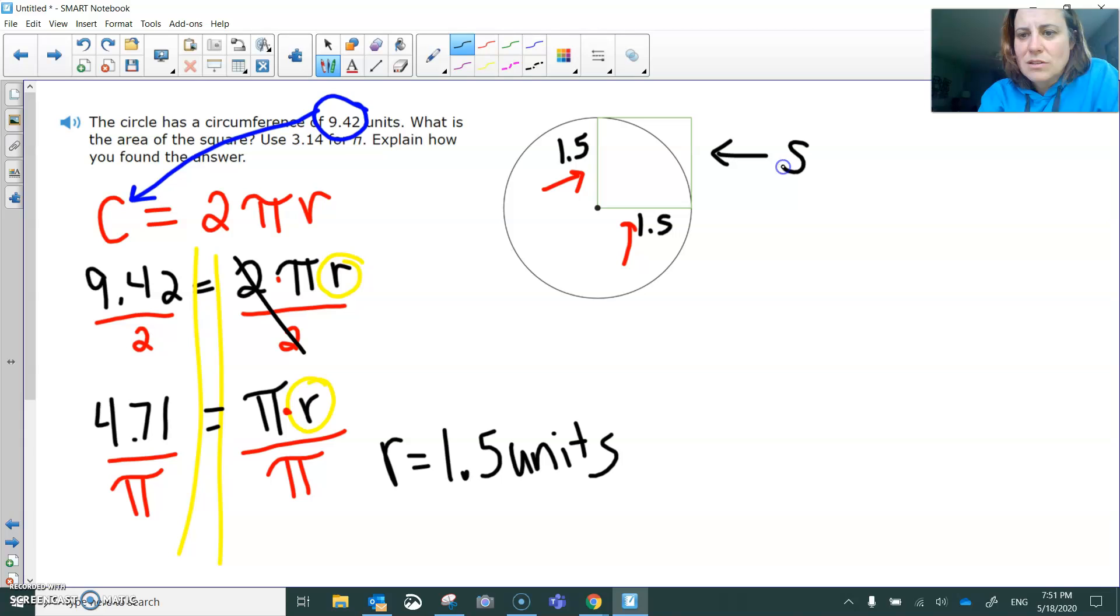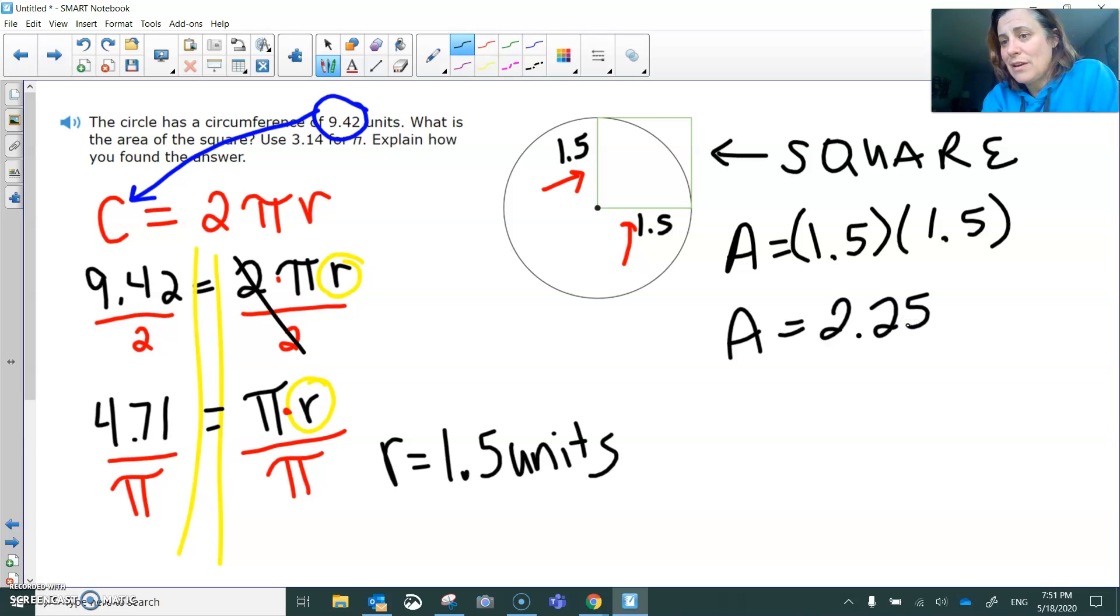And we know that the formula for the area of the square is to multiply one side by another. So we're basically going to do 1.5 times 1.5, which I think is 2.25. We don't know how big those 2.25 things are, so we're just going to call them units. And the shape of those units are squares, so we're going to put a little square on the word unit, not on the number itself, just on the word unit.